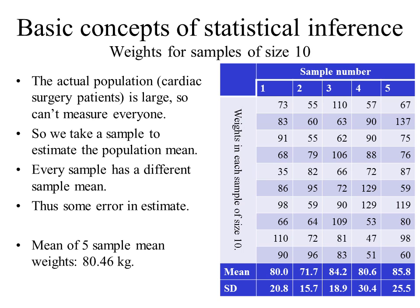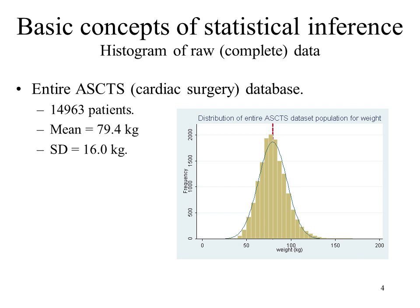Compare that to sample two, where the standard deviation is 15.7 and the mean is 71.7. If you take the mean of these five sample mean weights, you get 80.46. Looking at the entire cardiac surgery database with just under 15,000 patients, the overall mean is 79.4 kilograms and the overall standard deviation is 16 kilograms.